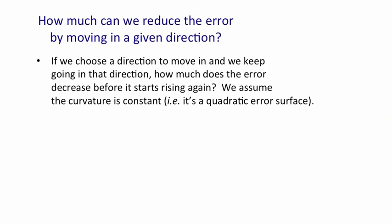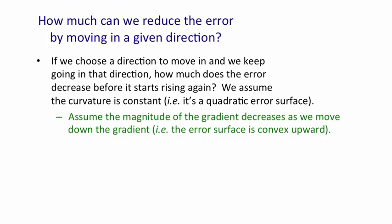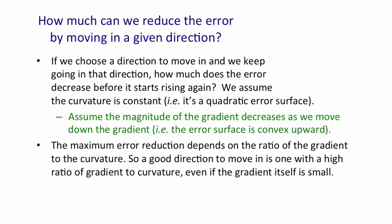When we're training the weights of a neural network, we're trying to get as far down the error surface as possible. If we choose a given direction to go in, how much reduction in the error can we achieve by going just the right distance in that direction? How much does the error decrease before it starts rising again? We'll assume that the curvature is constant — i.e., we'll assume it really is a quadratic error surface — and that the magnitude of the gradient decreases as we move down the gradient, which amounts to assuming the error surface is concave upward like a bowl. The maximum reduction we can get in the error by going in a particular direction depends on the ratio of the gradient to the curvature. So we want to move in directions that have a good ratio.